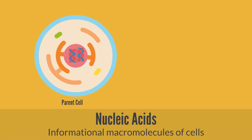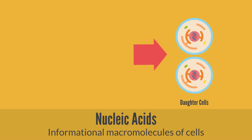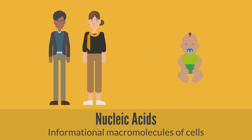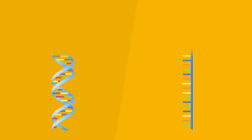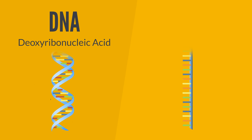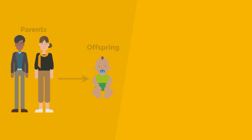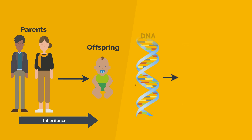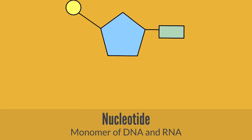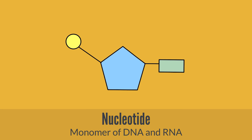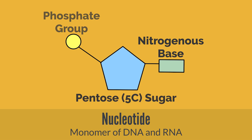Nucleic acids refer to the genetic material found in the cell that carries all the hereditary information from parents to offspring. There are two types of nucleic acids: deoxyribonucleic acid, or DNA, and ribonucleic acid, or RNA. The main function of nucleic acid is the transfer of genetic information and the synthesis of proteins in cells. The monomer unit of nucleic acids is known as a nucleotide, composed of a nitrogenous base, a pentose or 5-carbon sugar, and a phosphate group.